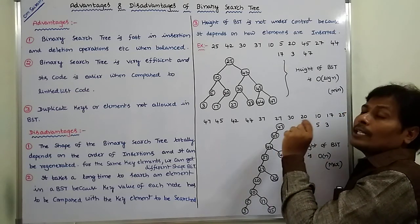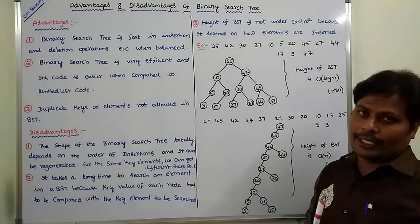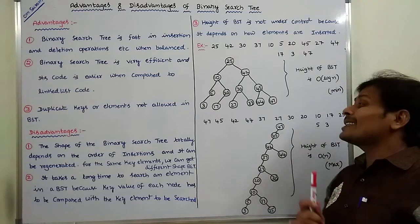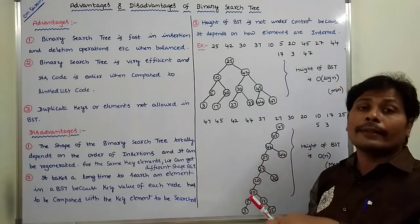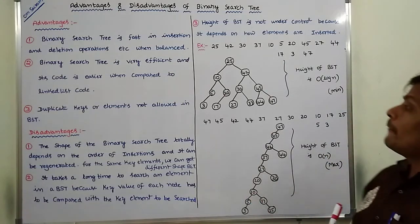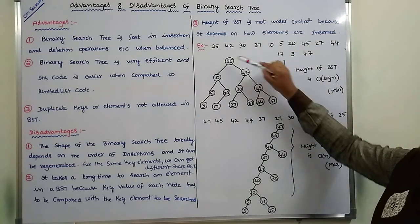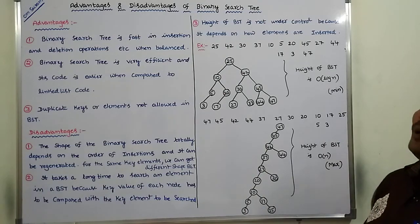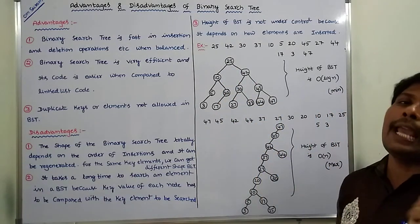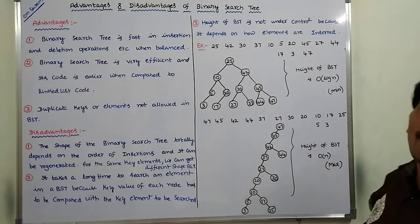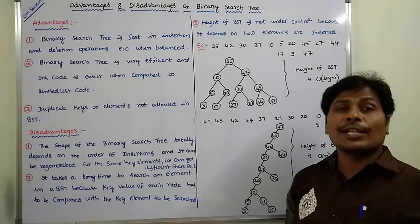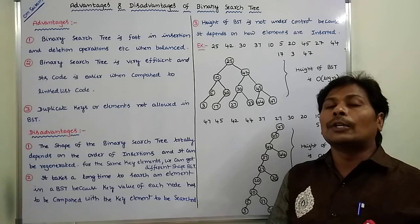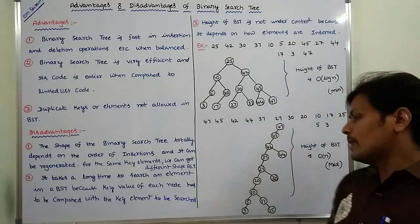Searching operation depends on the height of the binary search tree. How many comparisons were taken? 1, 2, 3, 4 — four comparisons. Every element is either in the left subtree or right subtree, and our key element is compared with each node's key value. If the height of the binary search tree is more, then the searching operation takes more time.